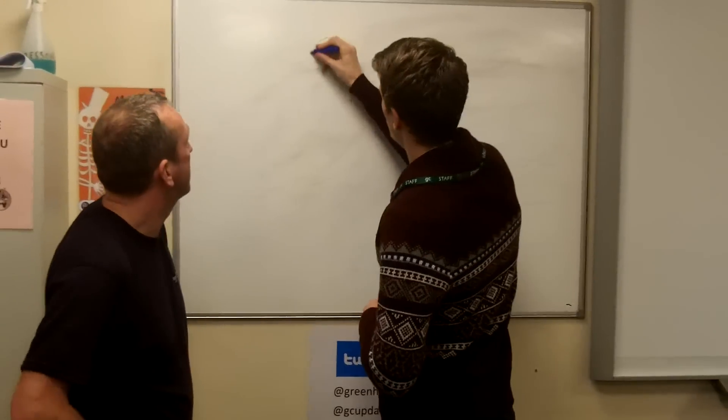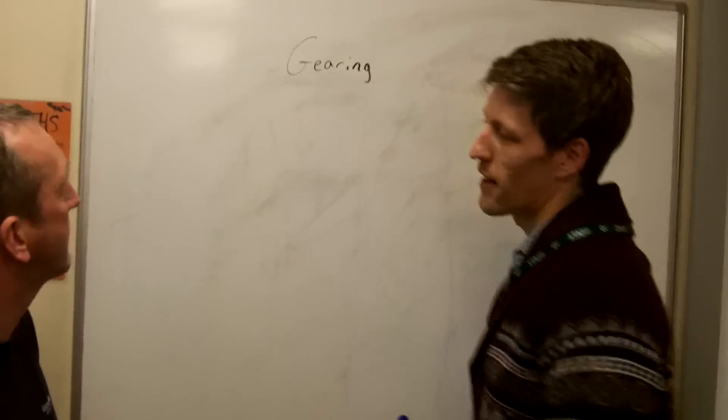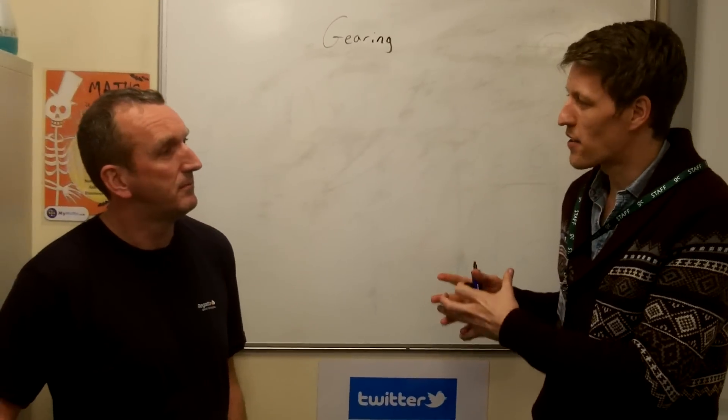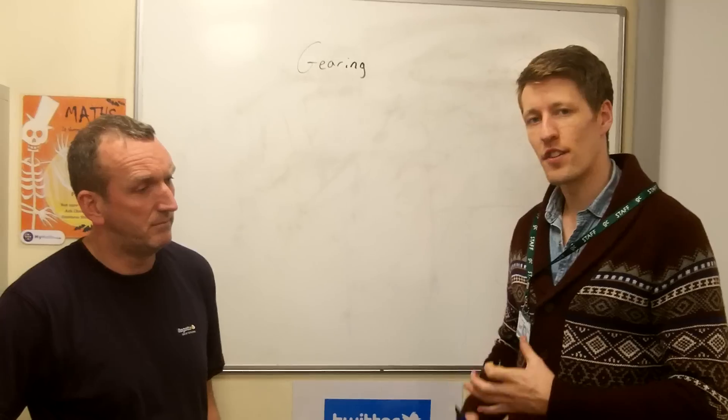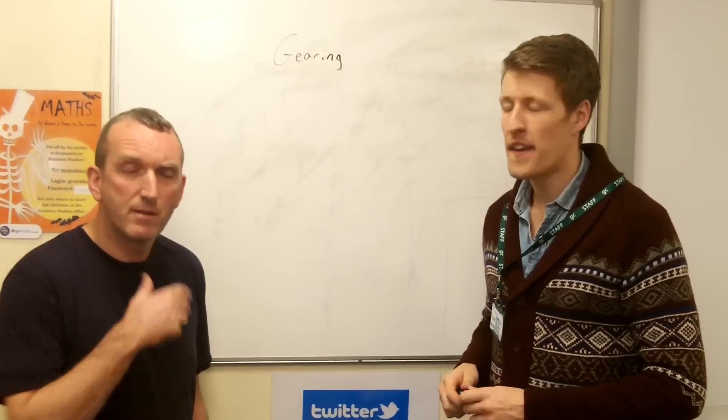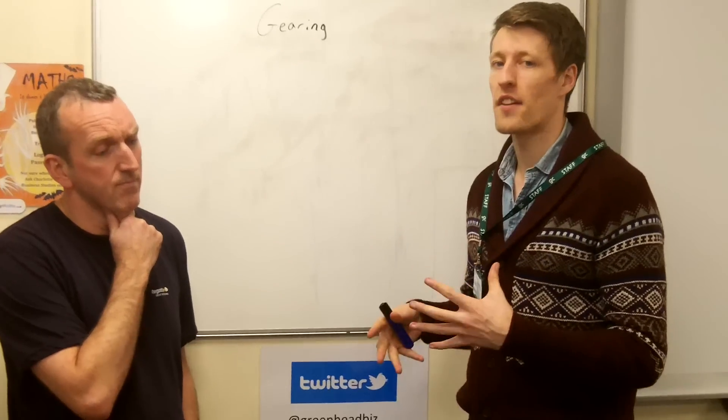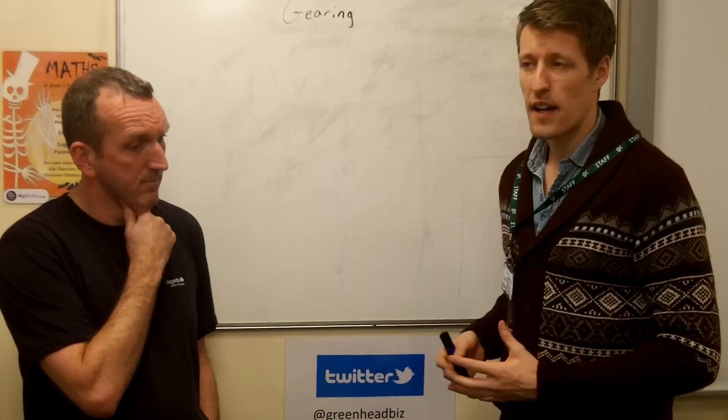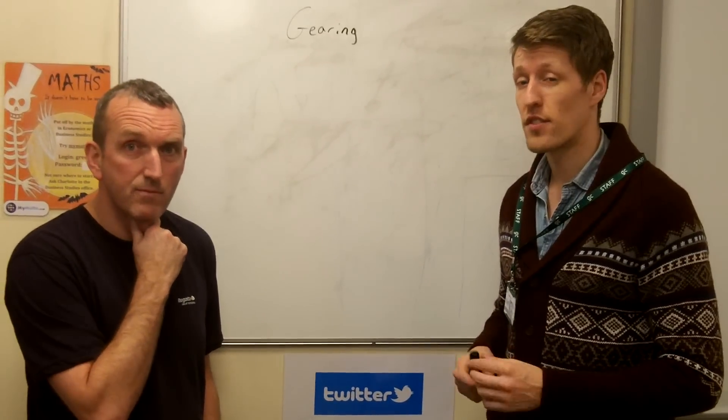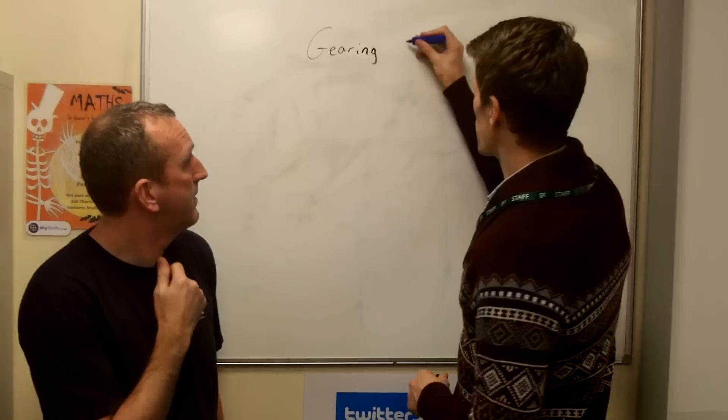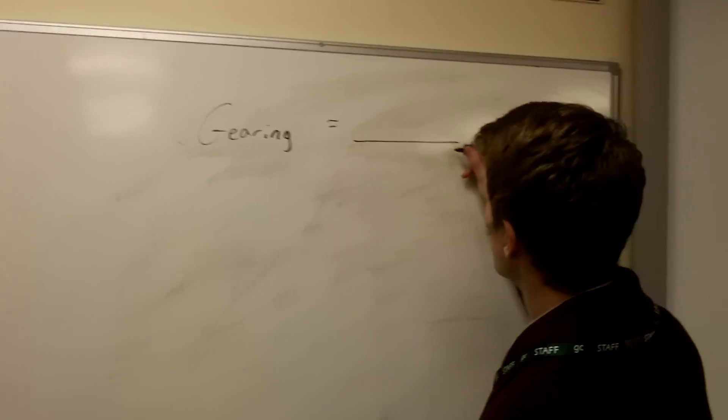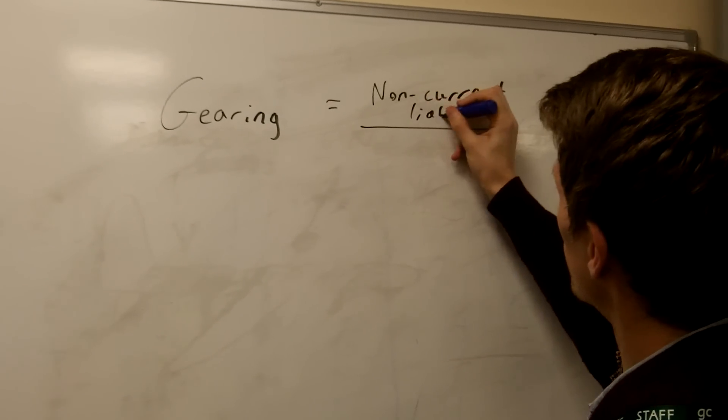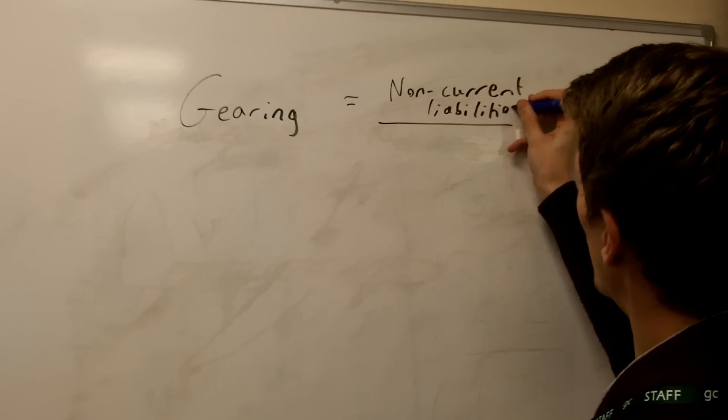This concept of gearing is really this idea of what proportion of the capital employed in the business is made up of debt or fueled by debt. Debt being sources of finance that have been raised externally from the business, from banks, etc. And there's this idea that if a business has got too much debt or is too debt burdened, it leaves them in a very vulnerable position. They're at the hands of having to pay back banks and they're vulnerable to changes in interest rates as well. If we just go through it, can you remember the formula? Something about non-current liabilities. Yeah, we'll talk about these just in a moment. Non-current liabilities over capital employed.